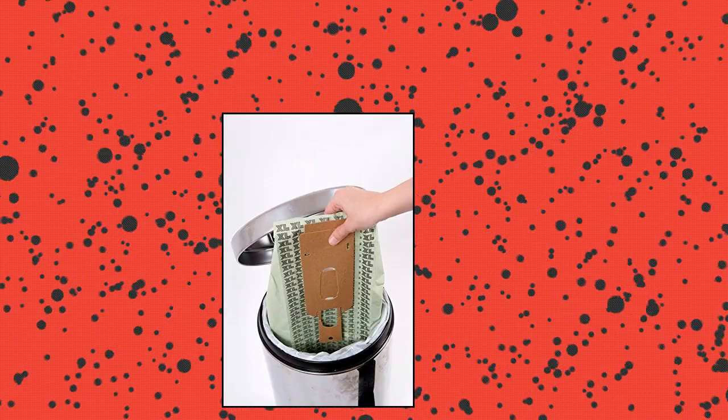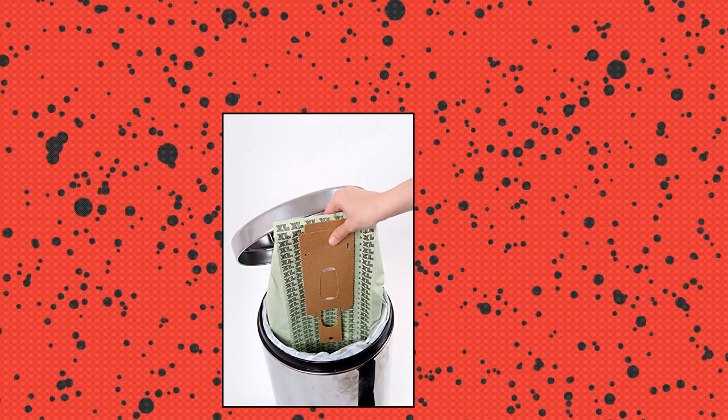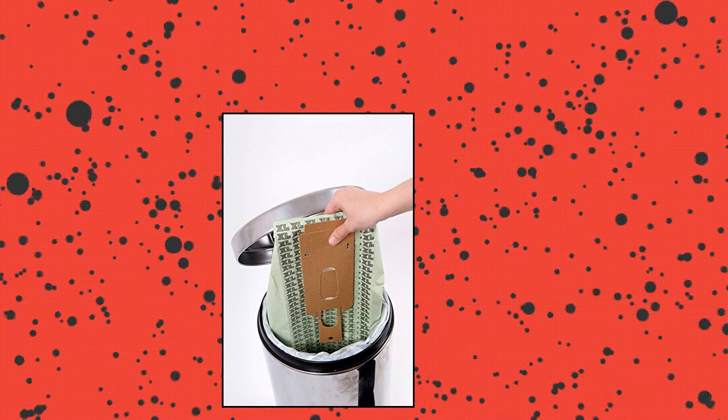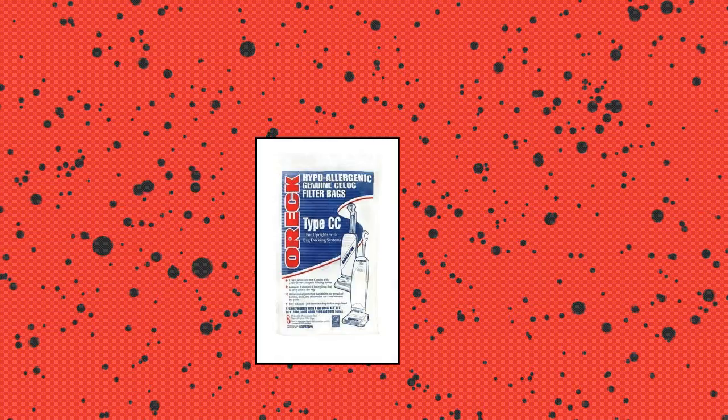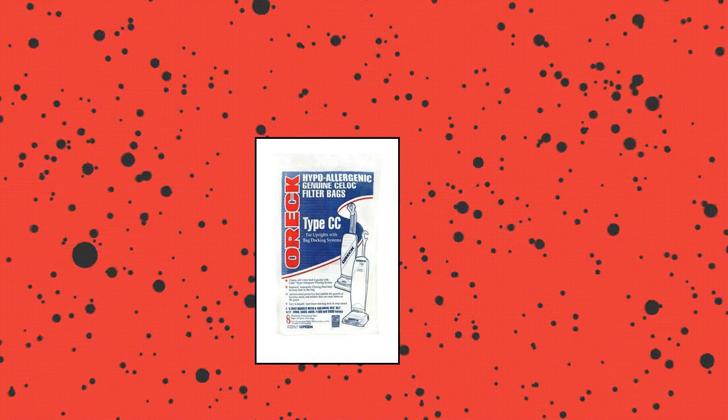Oric Vacuum Bag, Genuine Oric XL Vacuum Bags, Type CC Vacuum Bags. Fits only models with a bag dock: XL5, XL7, XL21, 2000, 3000, 4000, 7000, 8000, and 9000 series. CC PK8DW, package includes 8 bags. Make sure these bags fit your model number.